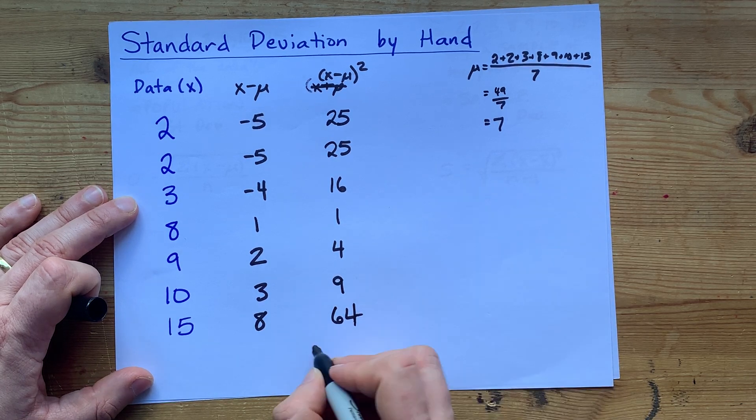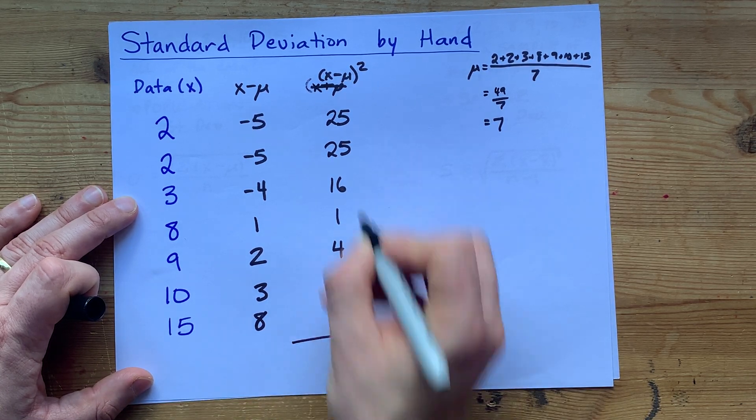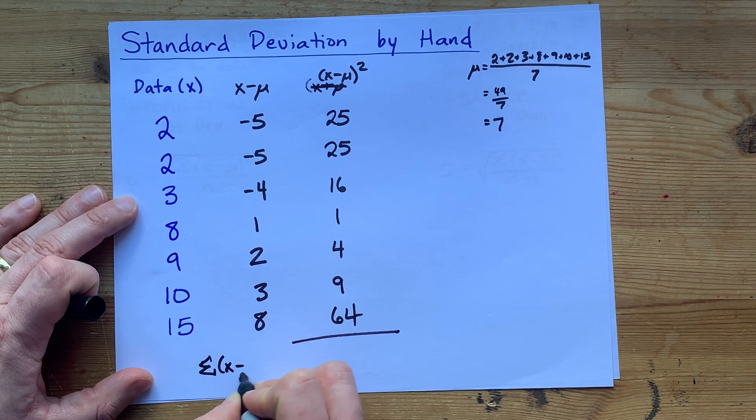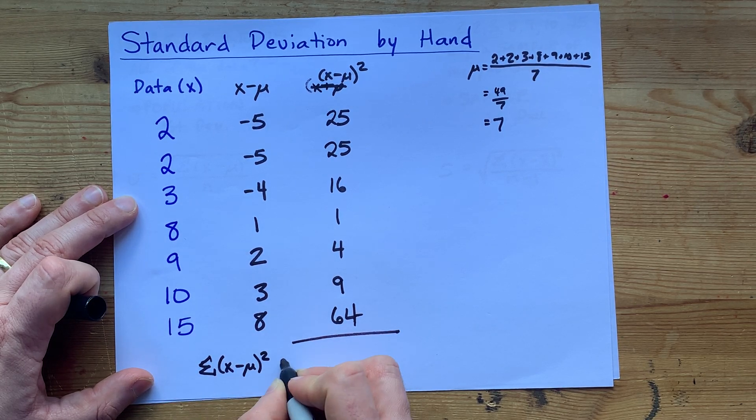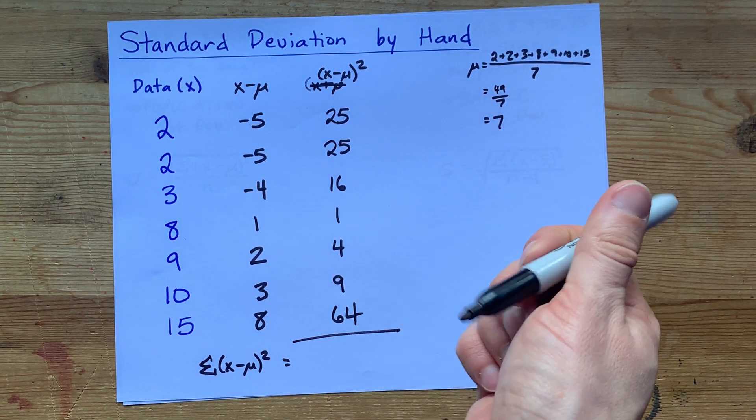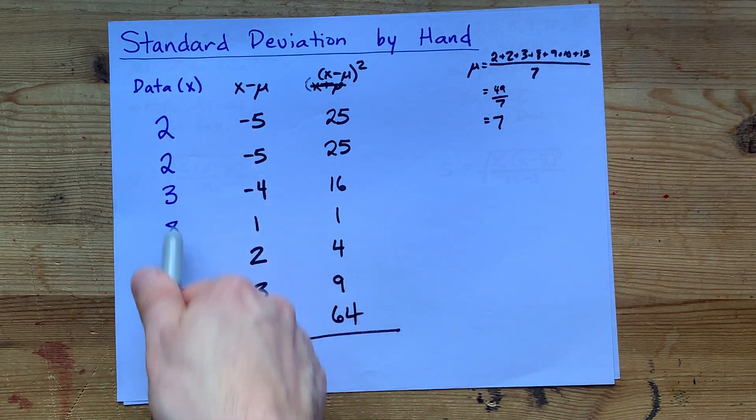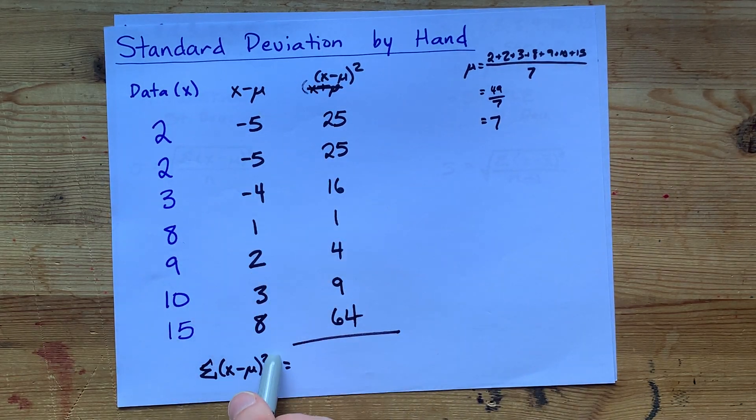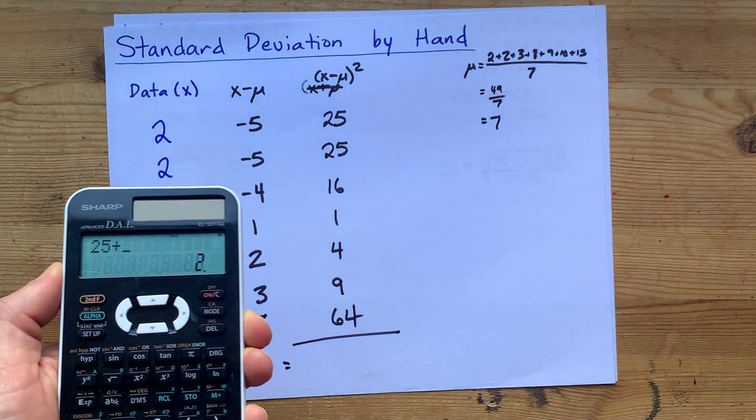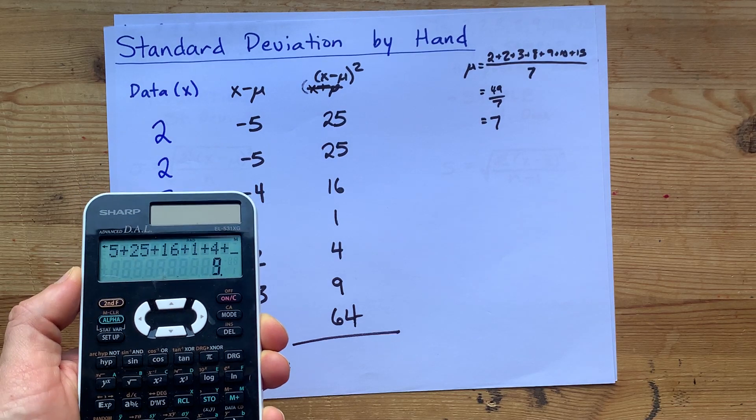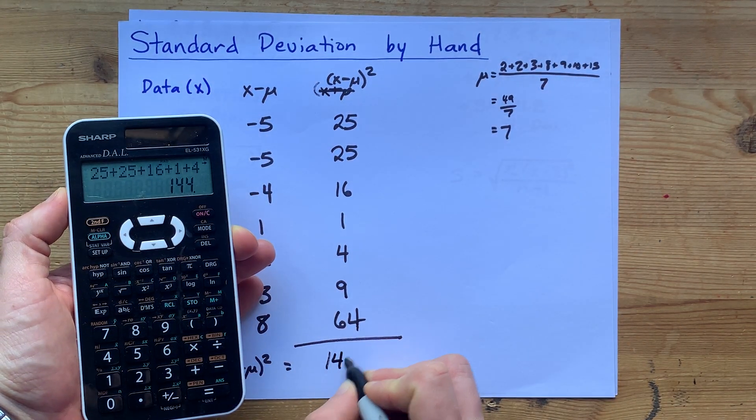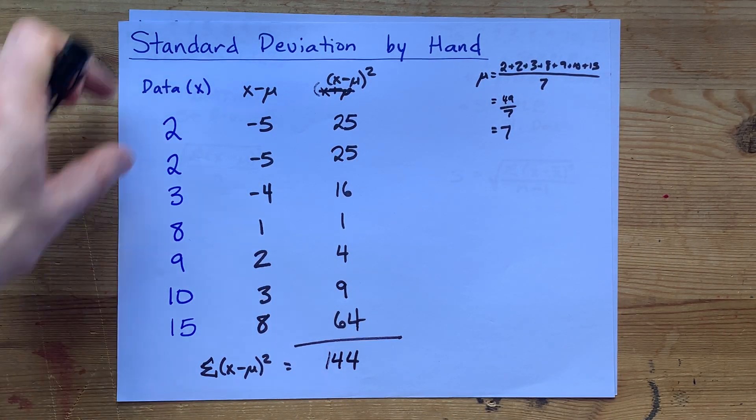The last step in this chart is I want you to add up all of those numbers. This is going to be the sum of all of the x minus mu squareds. That's a pretty big symbol for what was so far a pretty easy process. Find the average, subtract it from everything, square the differences, and add them all up. That's 25 plus 25 plus 16 plus 1 plus 4 plus 9 plus 64. I got 144. So far, so good.